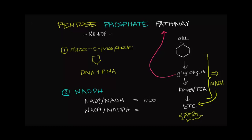the ratio of NAD plus to NADH is about 1,000. In other words, if you took the amount of NAD plus and divided it by the amount of NADH in the body, you would have about 1,000 times more NAD plus.